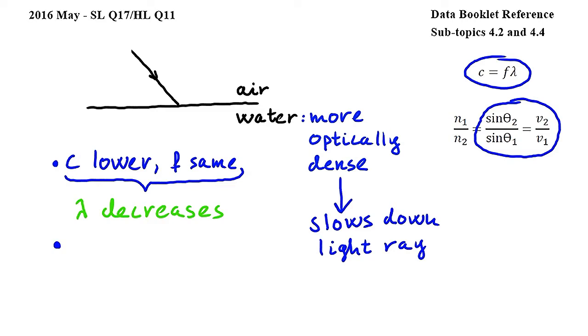We have deduced that v2 is smaller than v1, which means that by looking at the equation we can deduce that sine theta 2 is less than sine theta 1, which in turn means that theta 2 is less than theta 1.